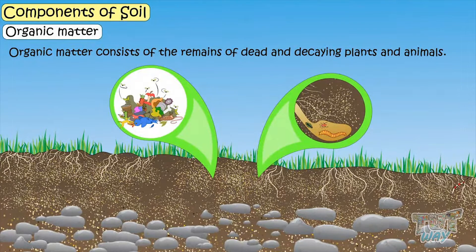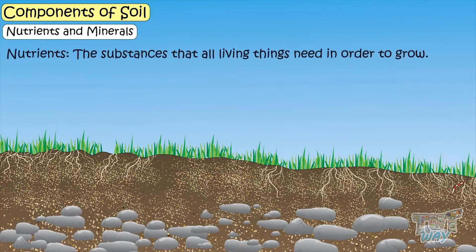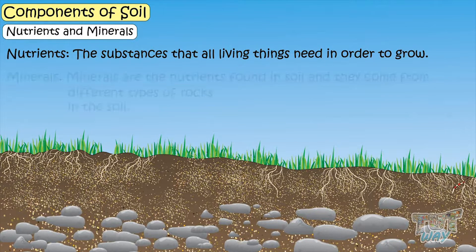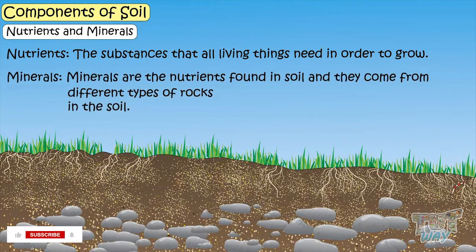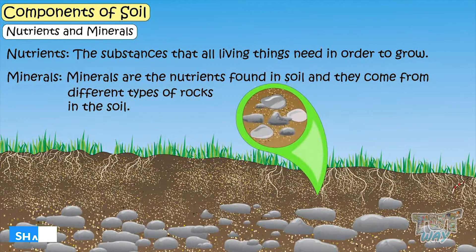Then there are nutrients and minerals. Nutrients are substances that all living things need in order to grow. And minerals are the nutrients found in soil, and they come from the different types of rocks in soil.